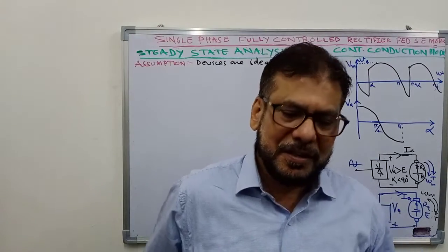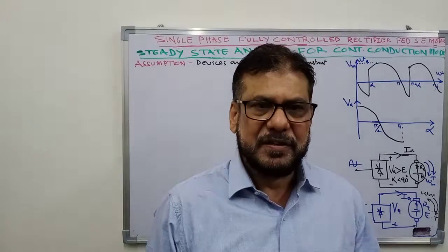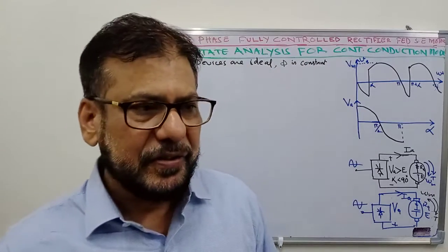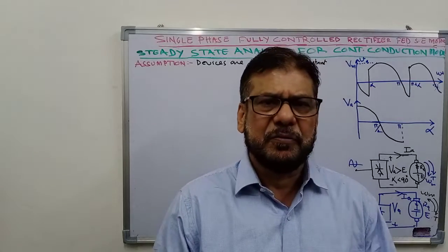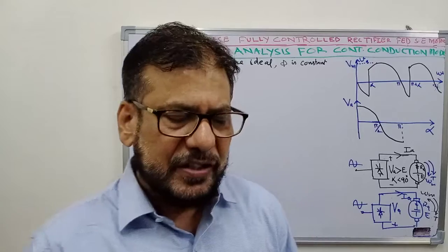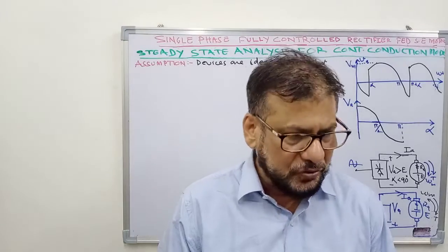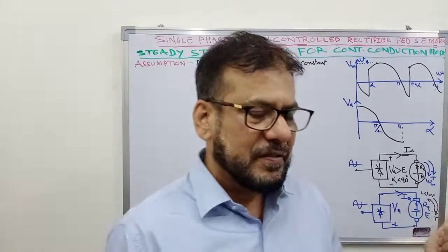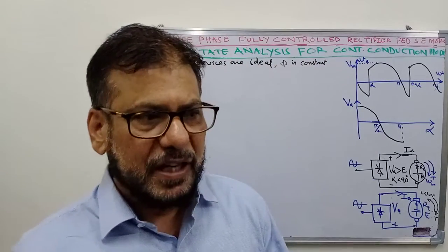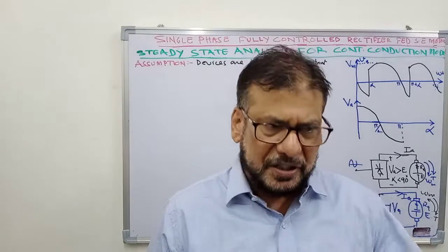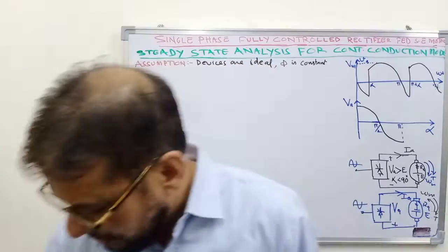In my previous lecture I explained the two modes of conduction for rectifier controlled DC motor drive — continuous conduction mode and discontinuous conduction mode. We discussed the waveforms in both cases in detail and saw how power flows in different parts of the cycle. In today's lecture we shall do the steady state analysis of rectifier controlled DC drive when the conduction mode is continuous. In the next lecture we shall discuss what happens when the conduction is discontinuous.